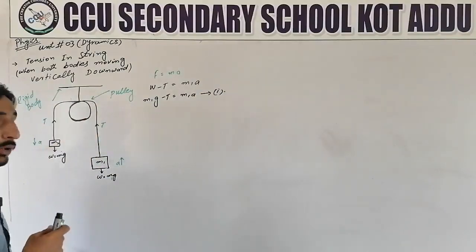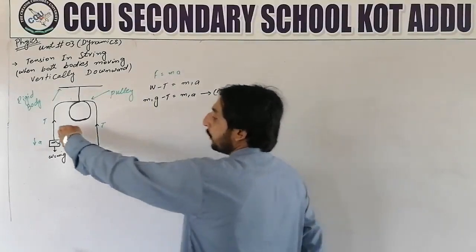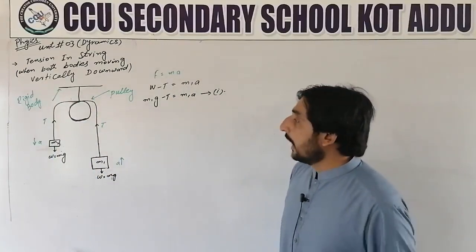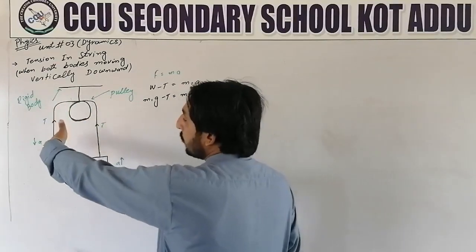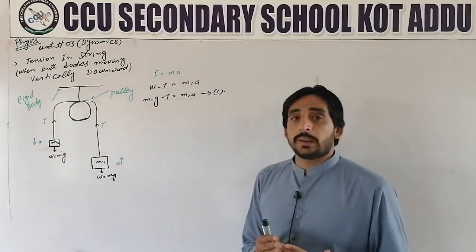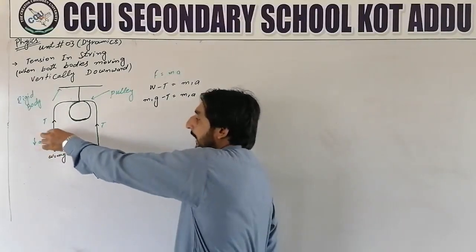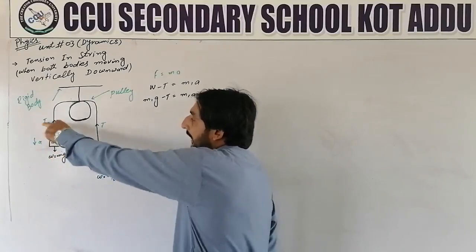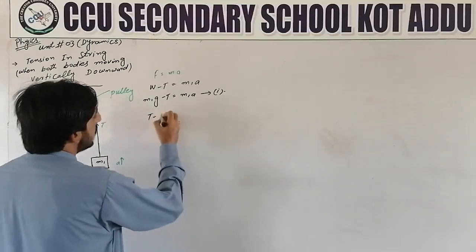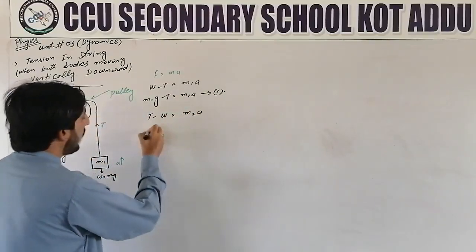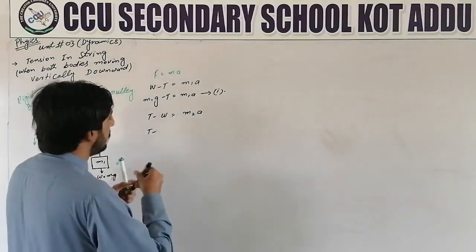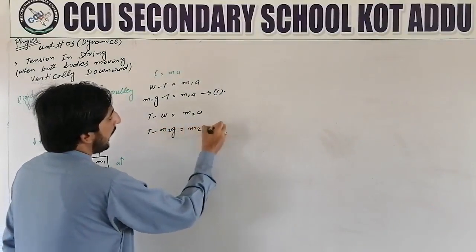Now for mass M2, we do the same. Weight acts downward and tension acts upward — two forces are working. Net force is the resultant of all forces. Since the forces are in opposite directions, we subtract them. For M2, tension is greater, so T minus W = m2a, that is T minus m2g = m2a. This is Equation number two.